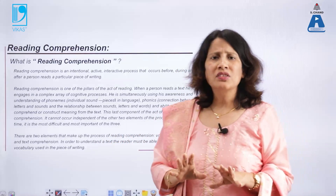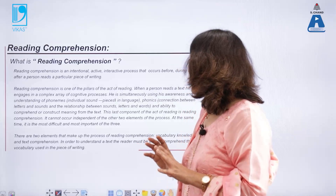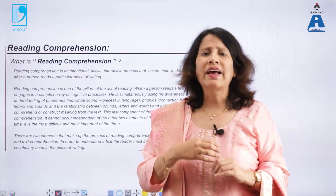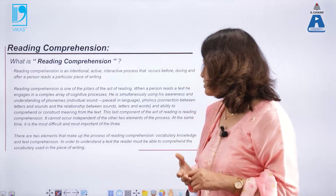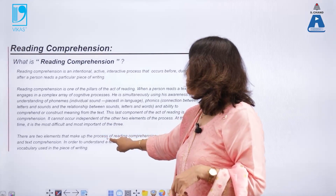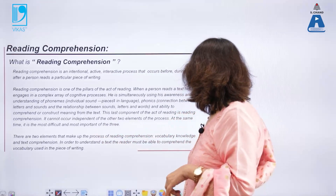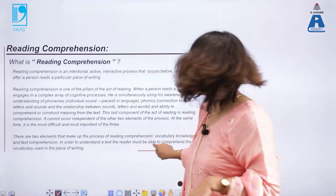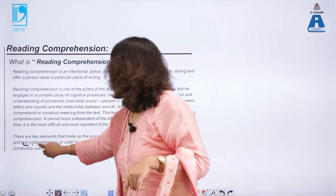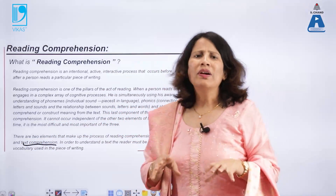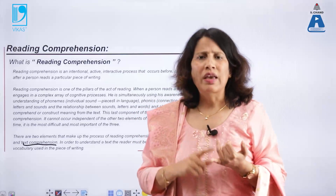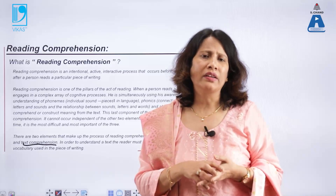Any reading comprehension activity is a pillar of the act of reading. There are two elements that make up the process of reading comprehension: vocabulary knowledge and text comprehension. In order to understand the text you must be able to understand the language, the vocabulary, and the meaning behind the written words.